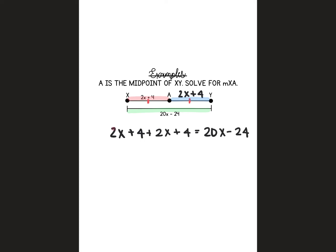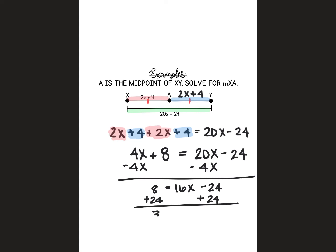I'm going to do 2x plus 4 plus 2x plus 4 equals 20x minus 24. I'm going to start by combining like terms. So I have 2x plus 2x, so that's 4x. I have positive 4 plus 4, so that is plus 8. And then I'm just going to carry down 20x minus 24. I subtract 4x from both sides. So 8 equals 16x minus 24. Add 24 to both sides. 32 equals 16x. When I divide, I'm getting x equals 2.